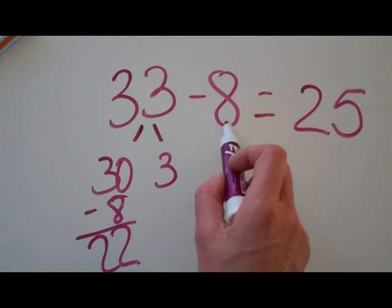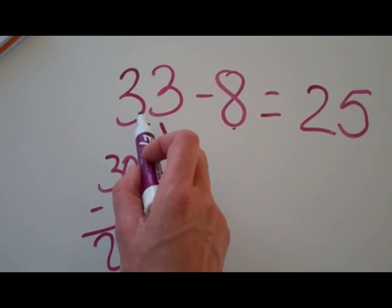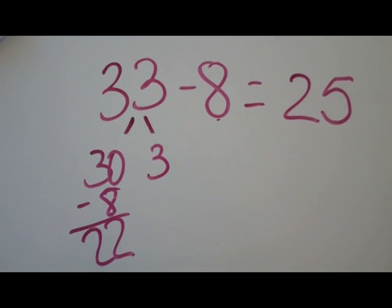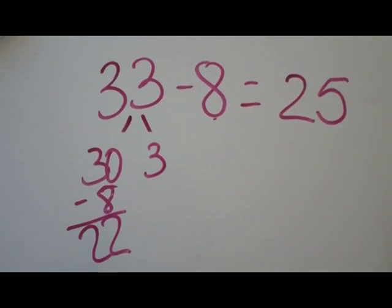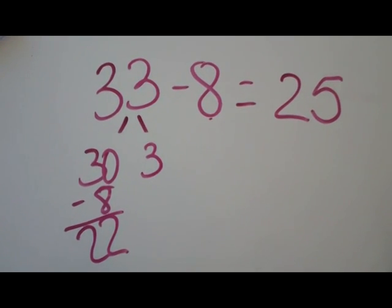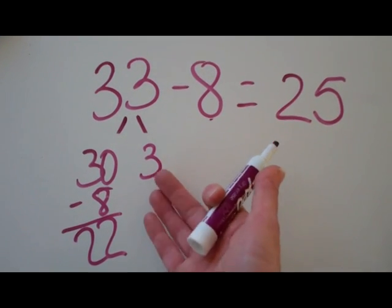Basically you're just looking, can I take this away from my ones? No. But I can take it away from my tens. 30 minus 8. You go back to that mental strategy of what's 10 minus 8? 2. So it's 22. Then you've got to add your ones. 25.